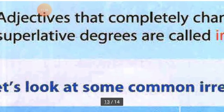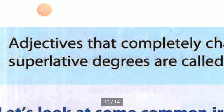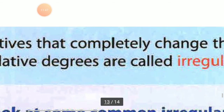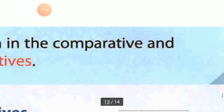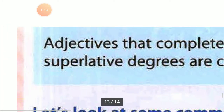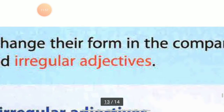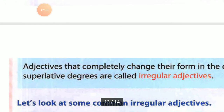Here we have the definition of irregular adjectives. Adjectives that completely change their form in the comparative and superlative degrees are called irregular adjectives. Unhe kya kaha jaata hai? Irregular adjectives.